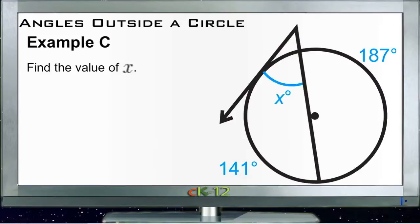And then finally example C. Example C has just one more step that the other two didn't have, and that's because we don't actually know the degree measure of this arc in here. We need the two arcs that are described by our angle in order to find out what the angle is.